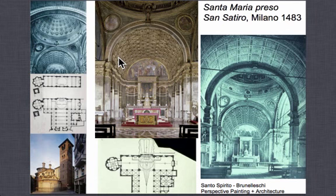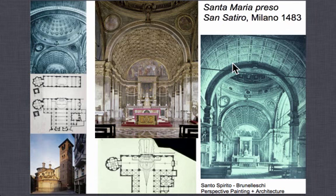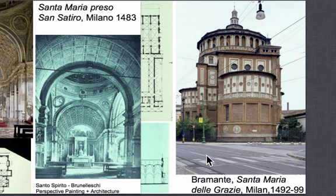Bramante creates a false perspective showing a long vaulted Roman coffered space behind the altar — just over the semicircular dome with spherical pendentives and arches on piers, as seen in Roman architecture, Hagia Sophia, Brunelleschi, and Alberti. It's quite a feat to create this kind of theatrical, almost cinematographic space. This shows how quickly Bramante mastered the techniques of understanding Roman architecture from both Roman examples and early Renaissance architects like Alberti. It's a tour de force for his first major project.